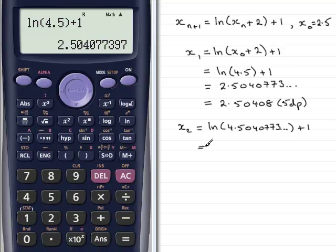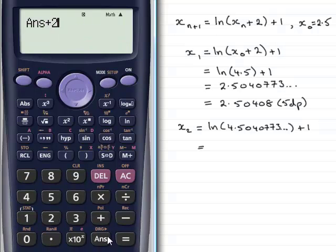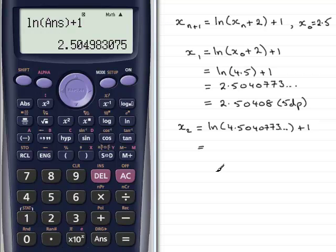So, let's work that out on the calculator. I've got the number there, that's x_1. We're going to add 2 to that, so we'll put plus 2. That gives us our value here. Now, I just want to take the natural log of that, so we'll just do natural log of the answer, and then add 1, and we have got 2.504983, and so on. And again, if we give this to 5 decimal places, what we're going to have is 2.50498 to 5dp.